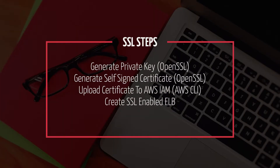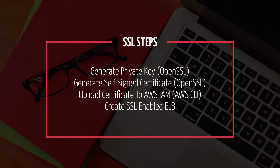These are the steps we'll be following today. First we'll generate a private key using OpenSSL, then generate a self-signed certificate using OpenSSL, then add our new self-signed certificate to AWS IAM — Identity and Access Management — using AWS CLI. And finally we'll create a load balancer and assign the certificate to access a sample website hosted on an EC2 instance using SSL.